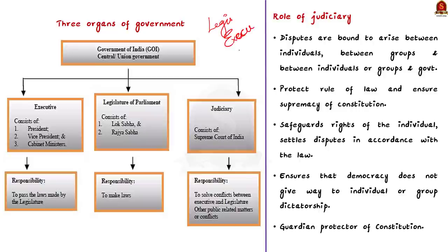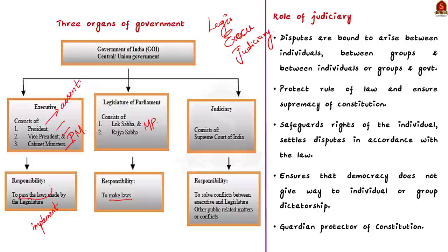Under the Government of India, the executive functions are performed by the executive, which includes the president, vice president, prime minister, and cabinet ministers — they implement the law made by parliamentarians. The legislative functions are performed by members of Lok Sabha and Rajya Sabha, who make the laws, and the president gives the final assent. The judicial functions are performed by the judiciary, which includes the Supreme Court, High Courts, and other subordinate courts. They resolve conflicts between executive and legislature and other public matters.